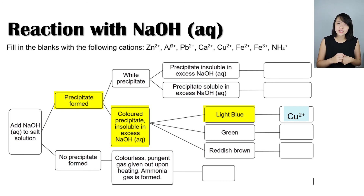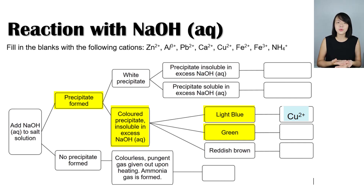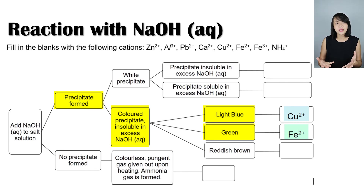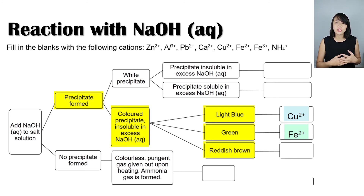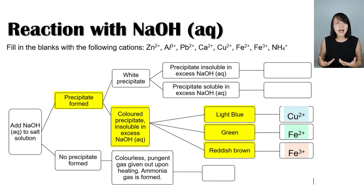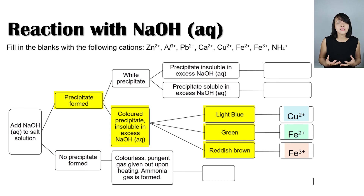If you add sodium hydroxide to the salt solution and see a green precipitate, you can confirm that the cation present is iron(II). The green precipitate does not dissolve in excess sodium hydroxide. If you see a reddish-brown precipitate form, you can confirm that the cation present is iron(III). Similarly, the reddish-brown precipitate does not dissolve in excess sodium hydroxide.